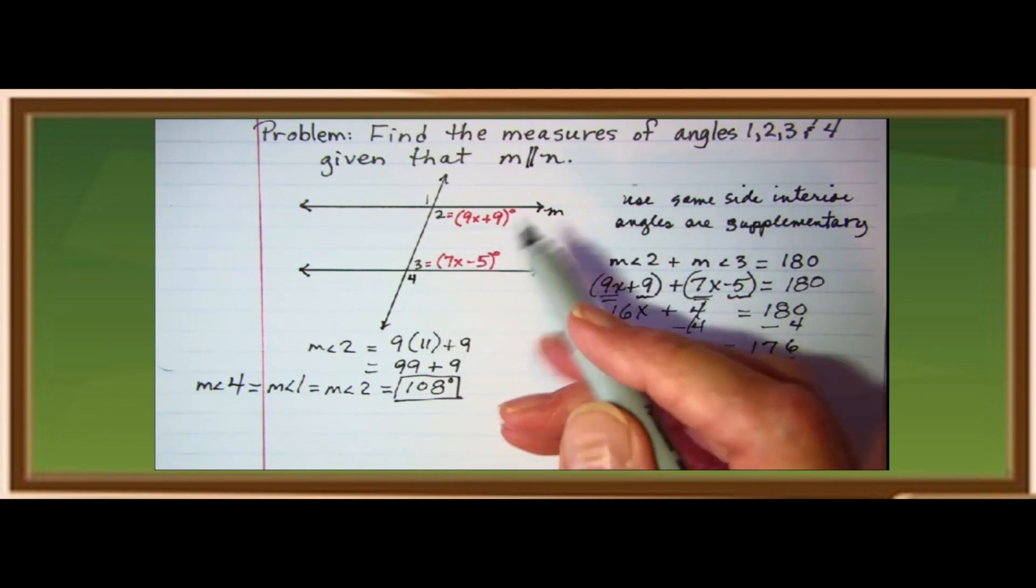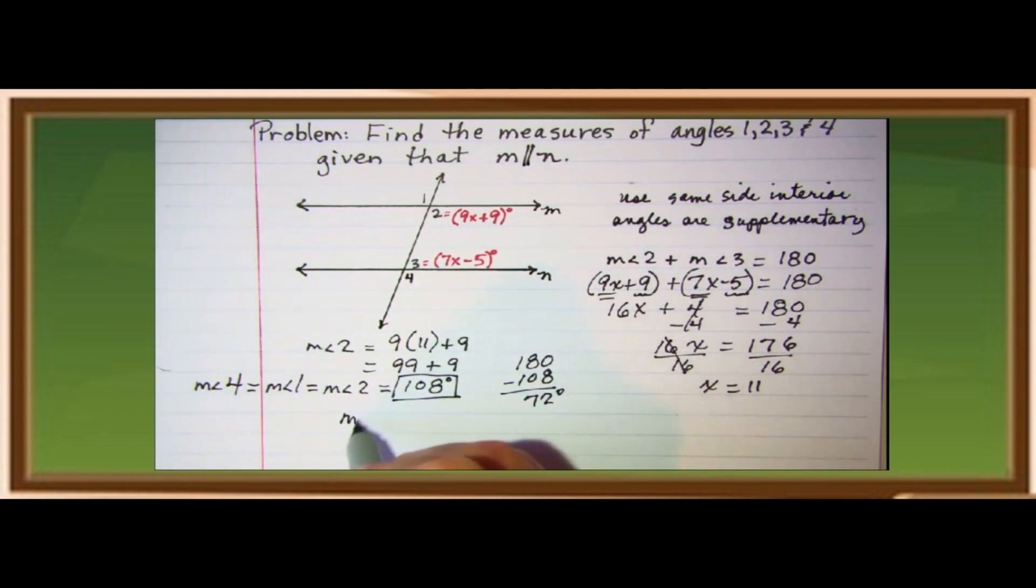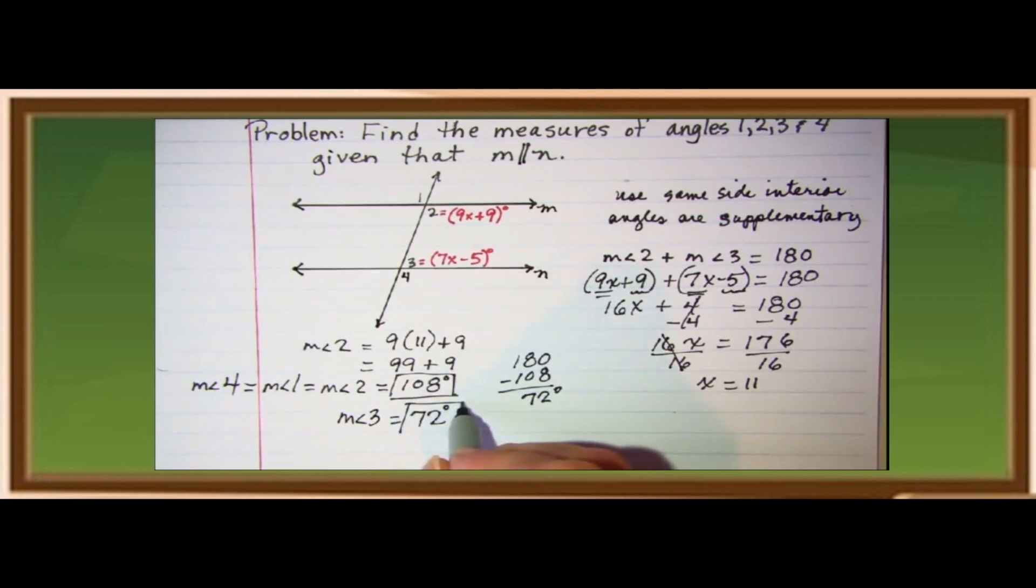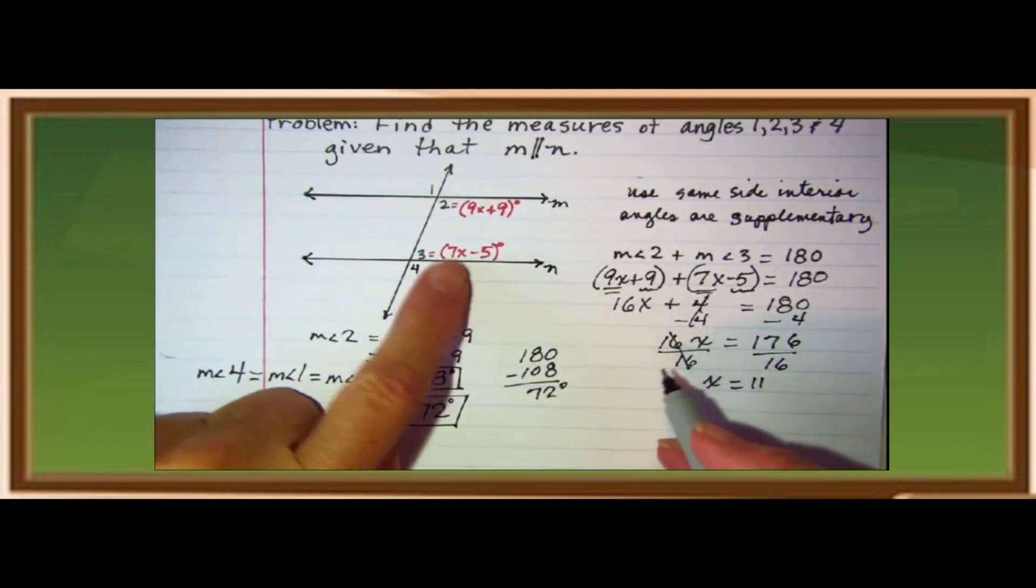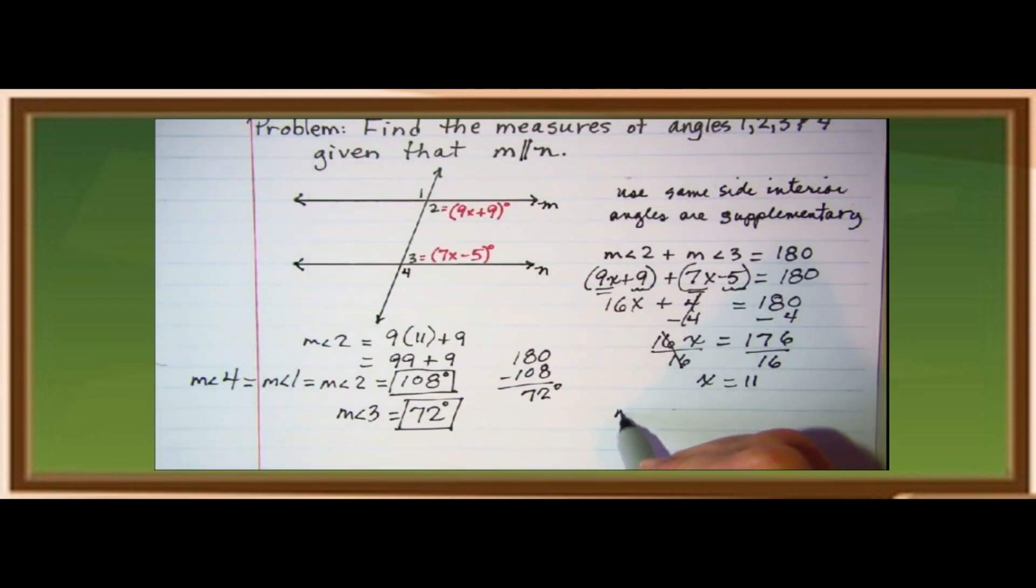And, since measure of angle two and angle three are supplementary, so, therefore, we have 180, which is the measure of supplementary angles, minus the measure of angle two, which is 108. Therefore, giving you 72 degrees. And, that is the measure of angle three. Okay, let us try to substitute measure of angle three, which is 7x minus 5. So, 7 times the value of x, which is 11 minus 5. That is 77 minus 5. Therefore, measure of angle three is equal to 72, which is equal or congruent to the other side being solved.